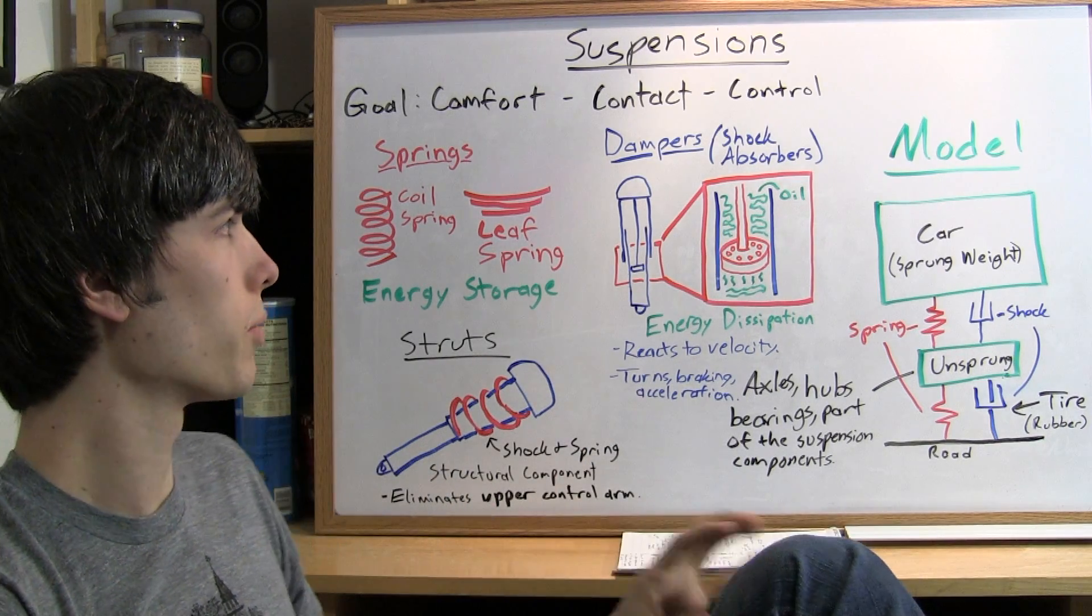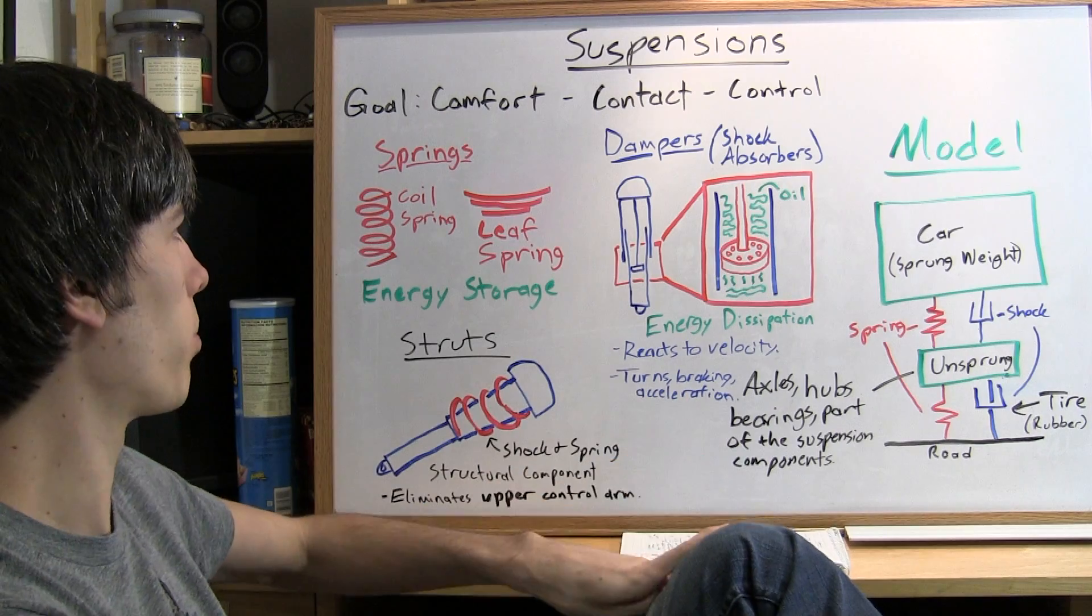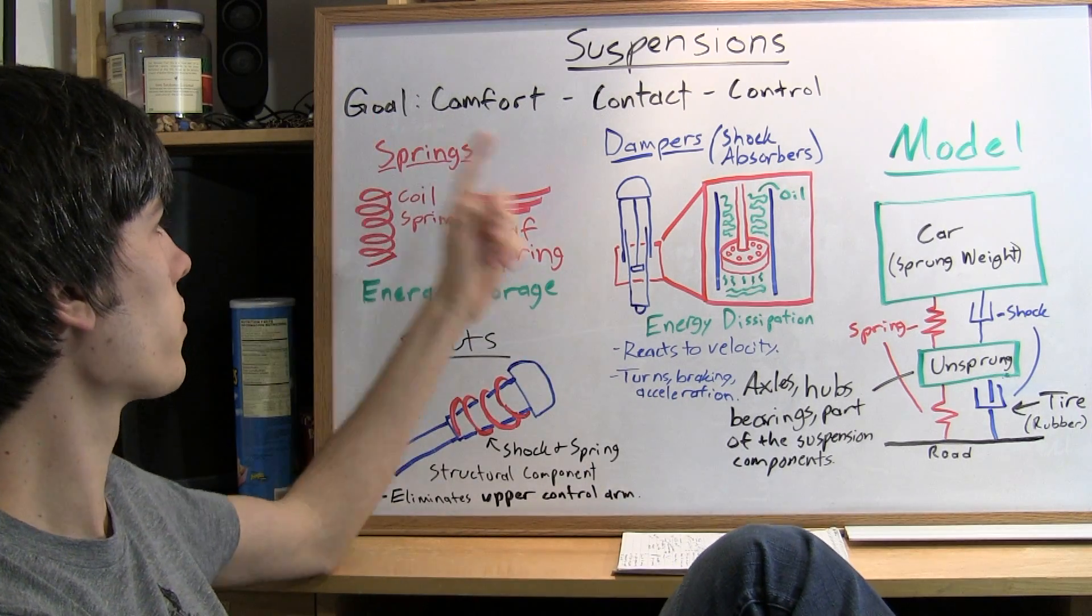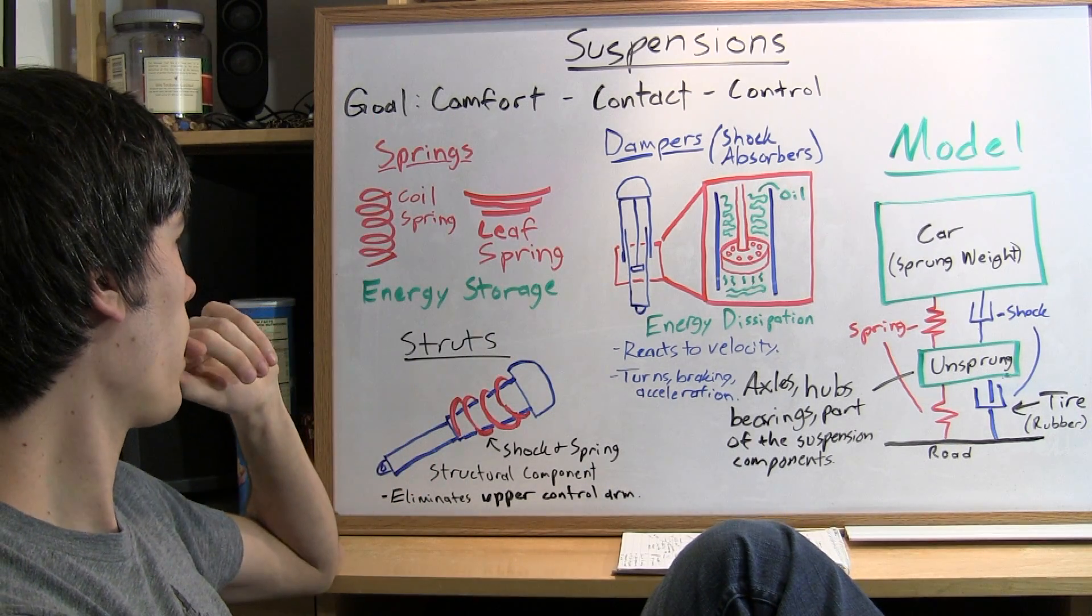Now, what components make up a suspension? Well, two of the most important things are springs and dampers.